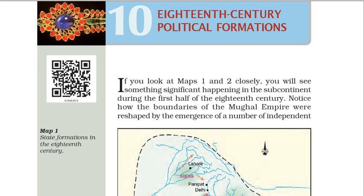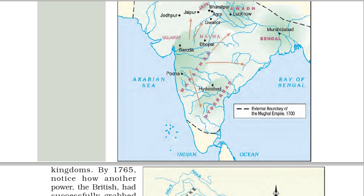Lesson 10: 18th century political formations. If you look at maps 1 and 2 closely, you will see something significant happening in the subcontinent during the first half of the 18th century. Notice how the boundaries of the Mughal Empire were reshaped by the emergence of a number of independent kingdoms.